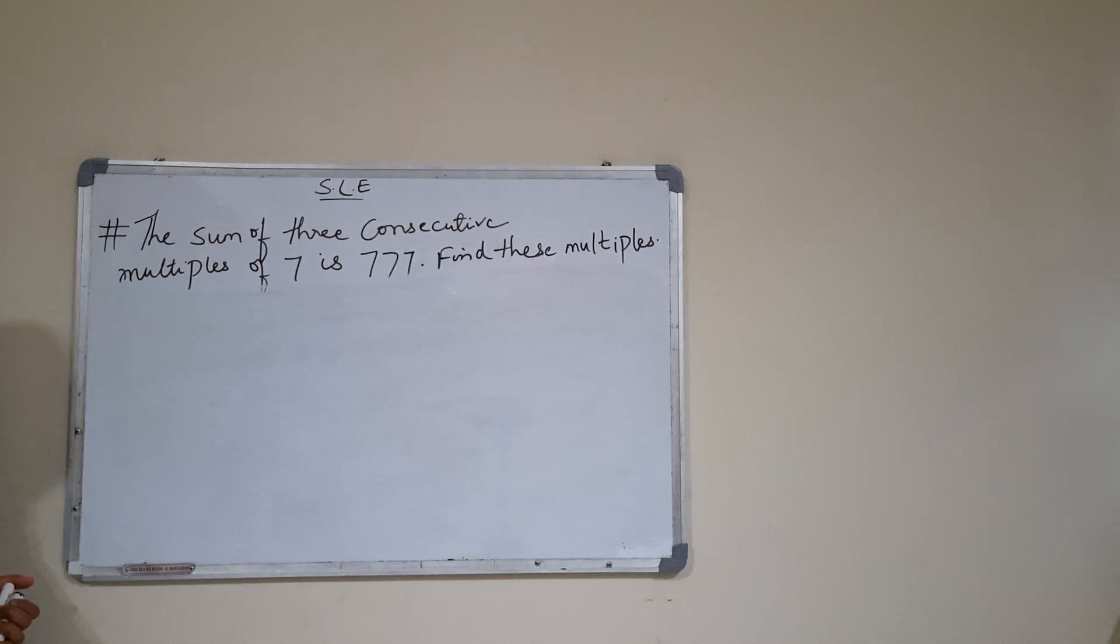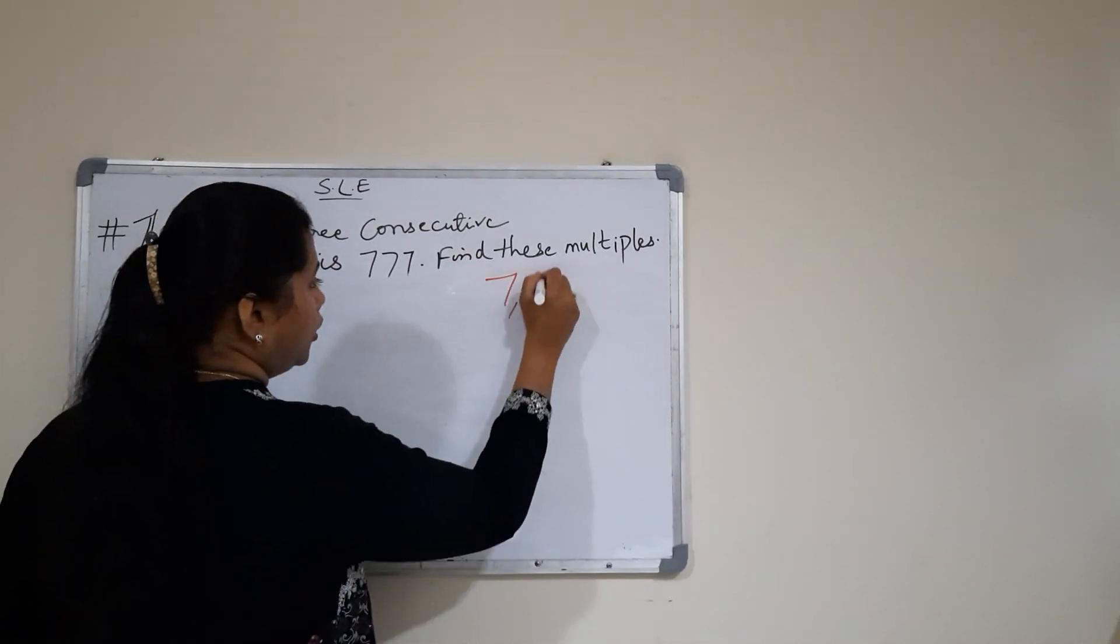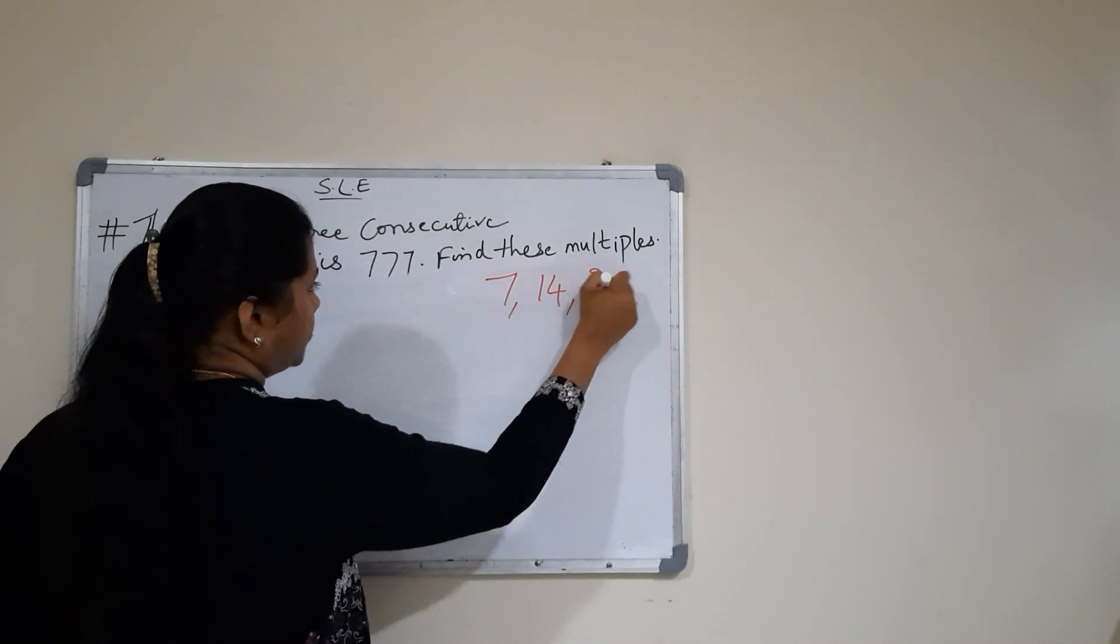So before doing this problem, I am going to write the three multiples of 7. They are 7, 14, and 21.